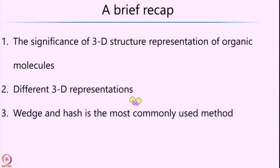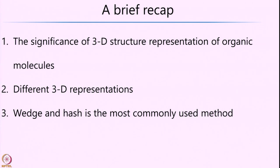In the last lecture, we first looked at what is the significance of 3-dimensional structural representation of organic molecules. We had seen the story of Vanthoff and how he came up with this brilliant idea of 3-dimensional arrangement of organic molecules, which was consequently proved by experiments. We also looked at different ways of representing organic molecules in 3D, using either a wedge-hash projection, Newman projection, Sawhorse projection, and finally, Fischer projections.